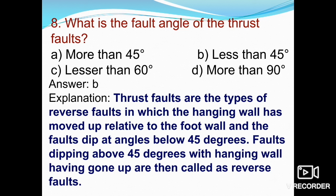To clarify: thrust faults are types of reverse faults in which the hanging wall has moved up relative to the foot wall, and the fault dips at an angle below 45 degrees. Faults dipping above 45 degrees with the hanging wall having moved up are called reverse faults.